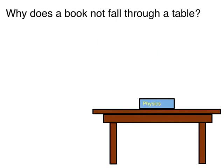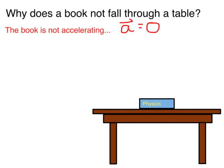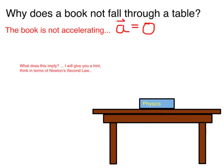So what do we know about this situation? Well, the book is just sitting on the table. The book's velocity isn't changing with time — it's always zero. So we know that the book is not accelerating. We can write this mathematically as a equals zero. Notice the vector symbol on top of the a, which reminds us that acceleration is a vector. So a is equal to zero.